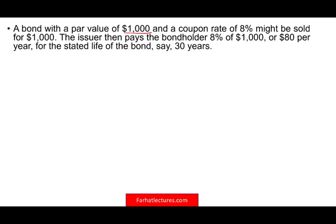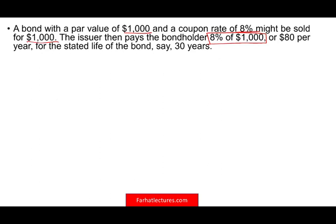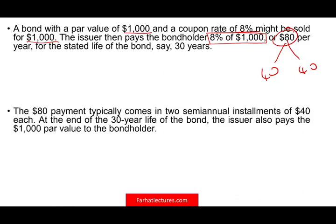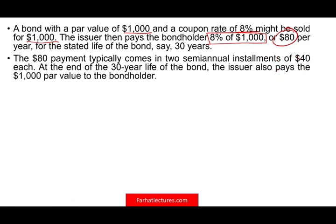A bond with a par value of $1,000 and a coupon rate of 8% might be sold for $1,000, more than a thousand, or less than a thousand. The issuer then pays the bondholder 8% of a thousand. The interest payment — whether this bond was sold for $1,100 or $900 — is always based on the face value times the coupon rate. So $1,000 times 8% equals $80, paid as $40 and $40 every six months.